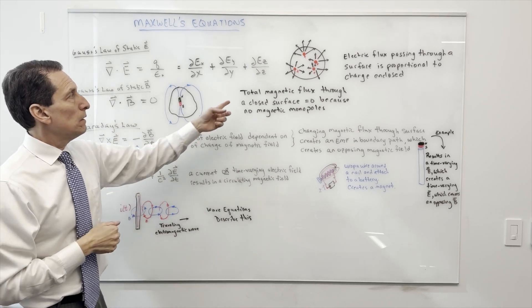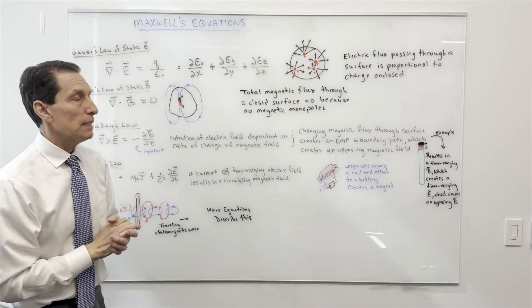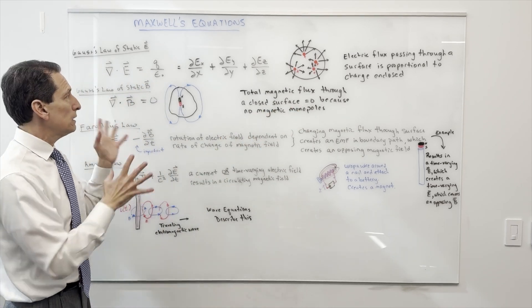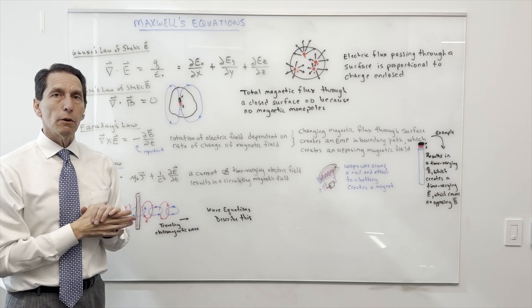The divergence is equal to zero. The total magnetic flux through a closed surface equals zero because there are no magnetic monopoles. That's again a fairly straightforward idea.